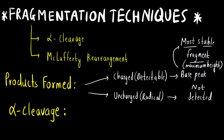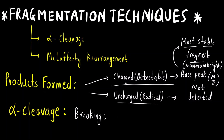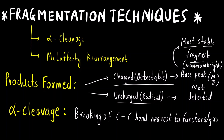Questions from this topic can be of two types: they will either ask you to directly draw the structures of the charged and uncharged fragments, or they will ask you to find out the m/z value of the charged fragment after performing alpha cleavage or McLafferty rearrangement. Now, alpha cleavage is the breaking of the carbon-carbon bond nearest to the functional group — just next to the functional group — that will be broken.